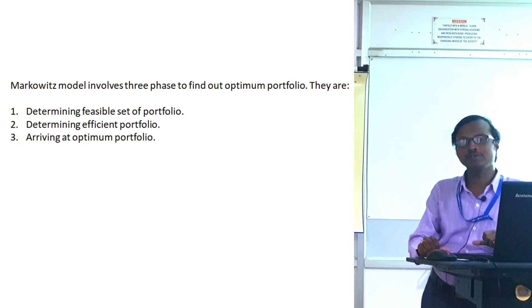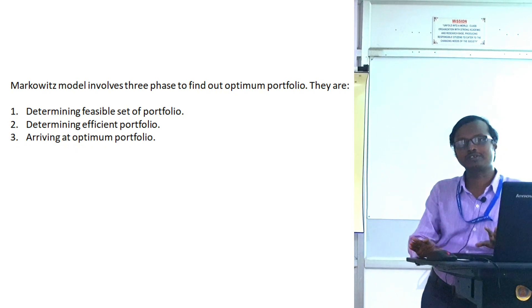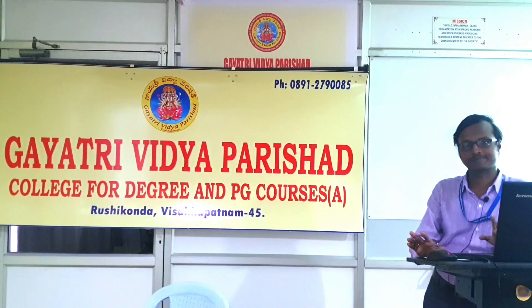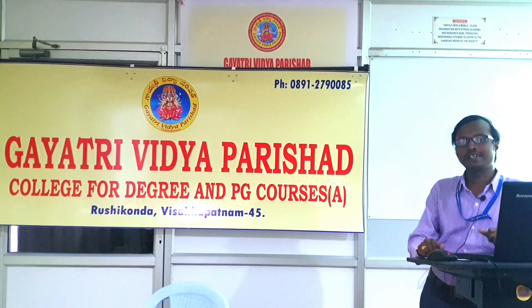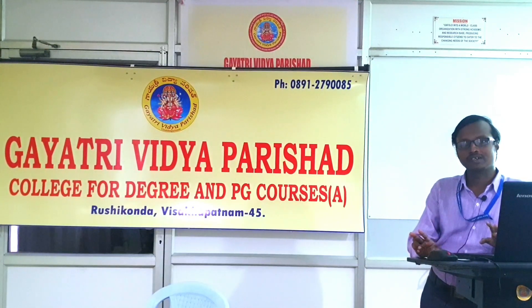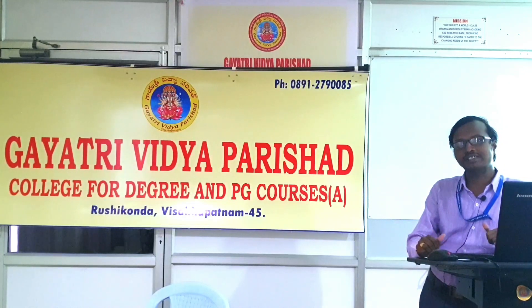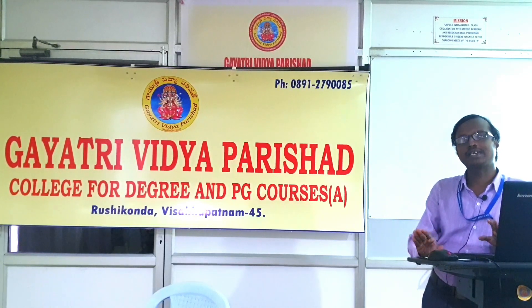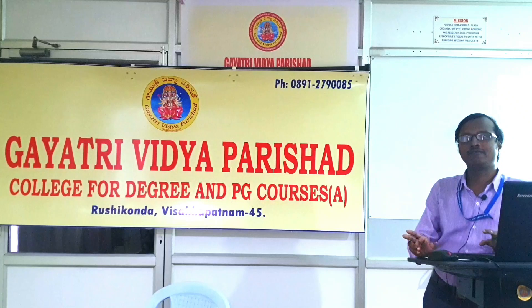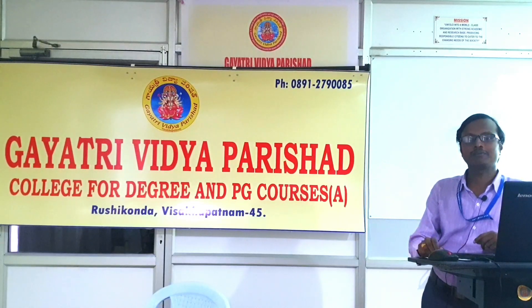Not all feasible portfolios are efficient; there are few efficient and some inefficient portfolios. Step two is to identify the set of efficient portfolios. To do this, Markowitz used the rule of dominance: if two portfolios have the same risk, the one with more return is dominating; if the return is the same, the portfolio with less risk is dominating. Using this rule, he classified feasible portfolios into efficient and inefficient.